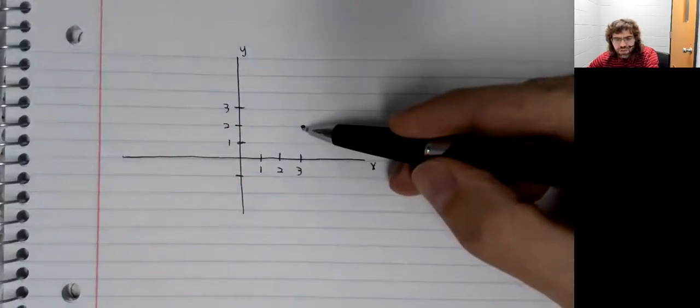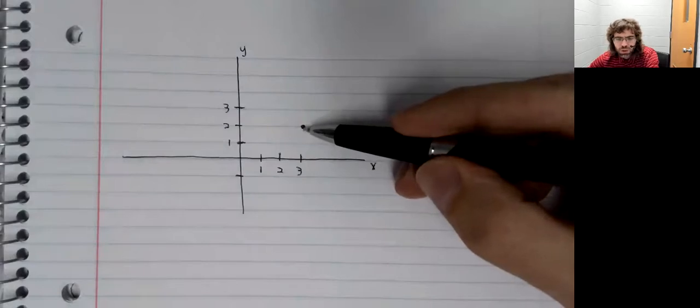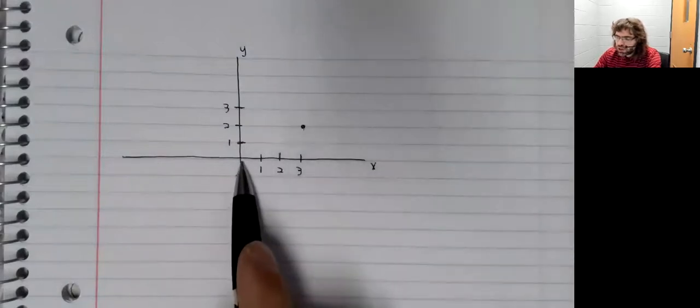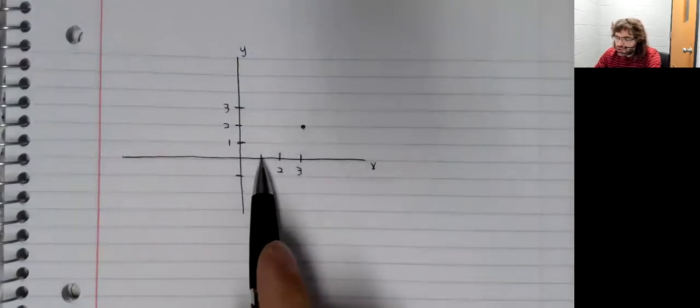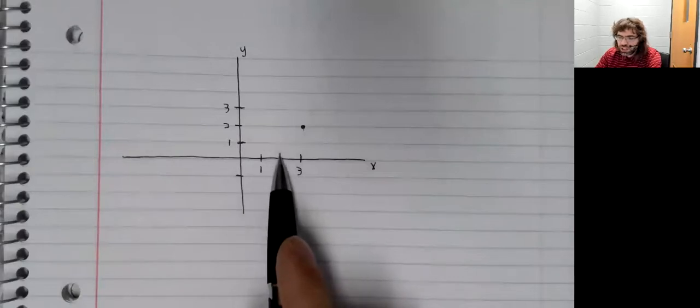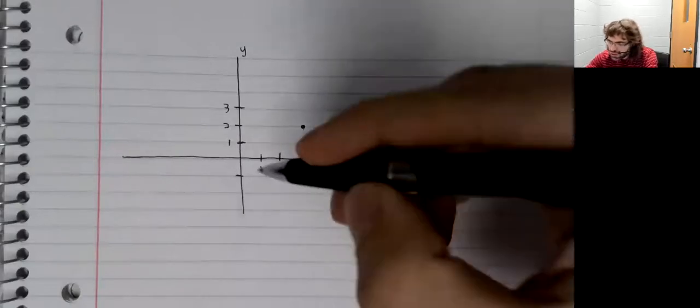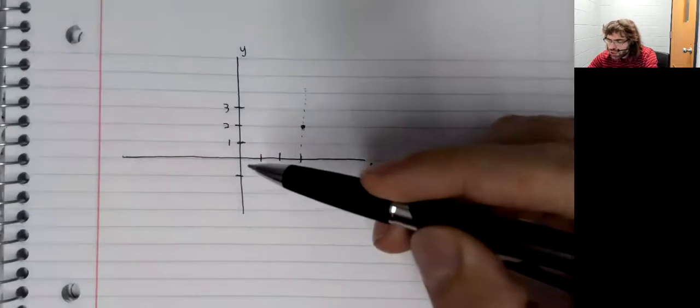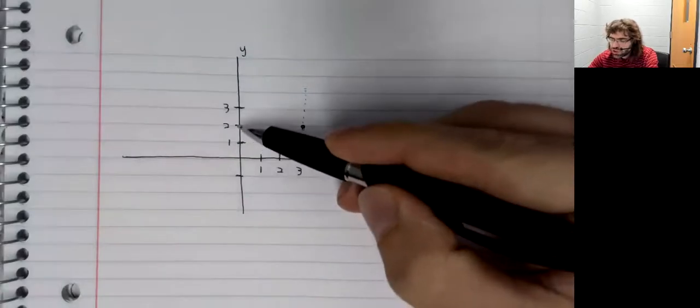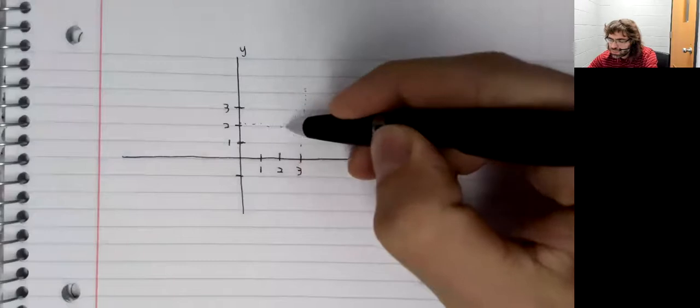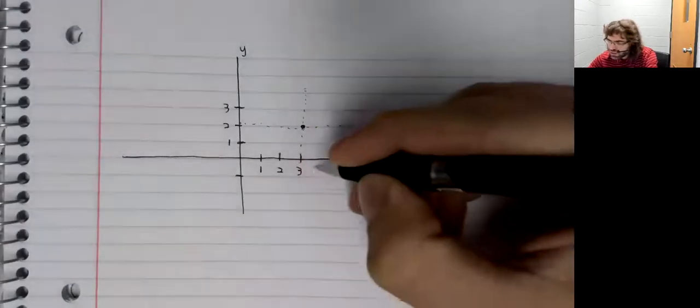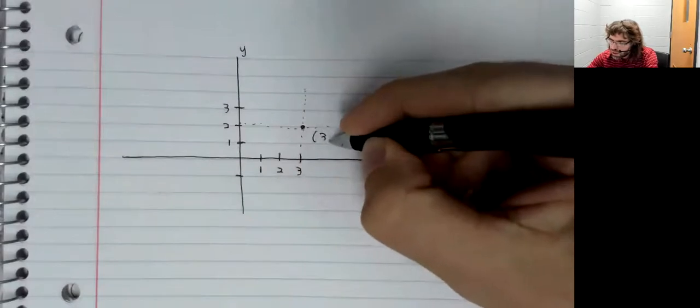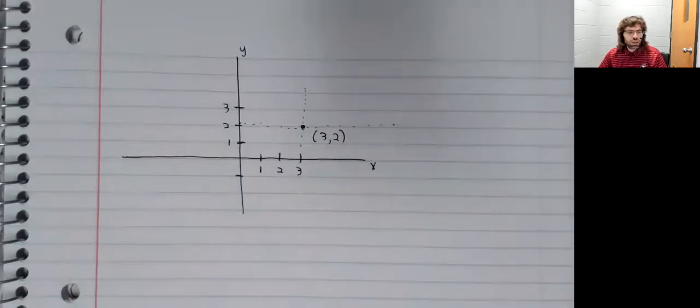And if we have a point and we want to know what that point is, well, starting from the origin, we travel one unit, two units, three units along the x axis, we travel one unit, two units along the y axis. And this is the point three comma two.